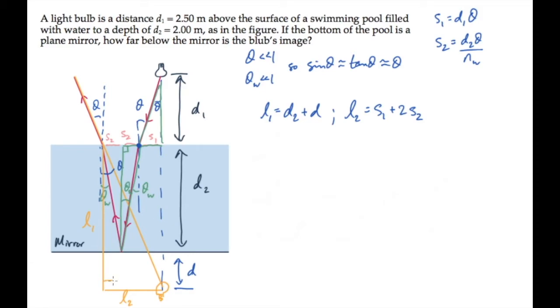The large orange triangle is a right triangle, where this angle is theta. We can write its tangent, the ratio of the opposite to the adjacent sides. That's l2 over l1.